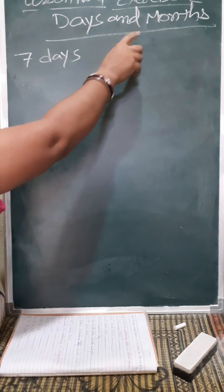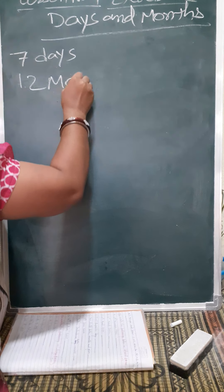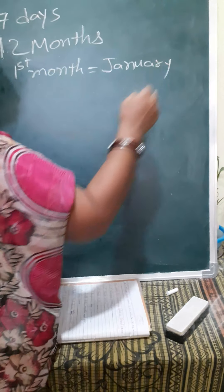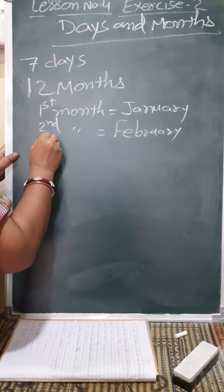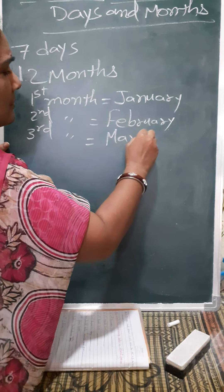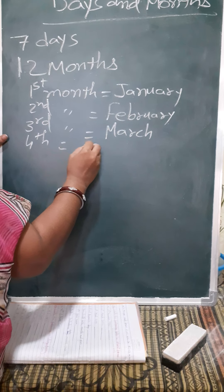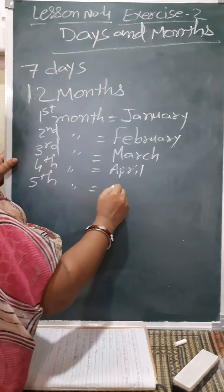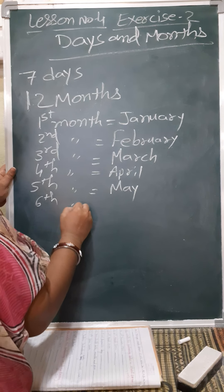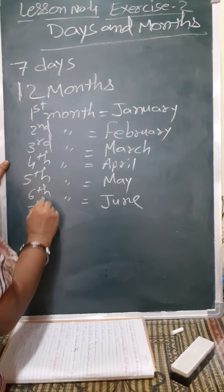Now months — you also know how many months are there in a year. There are 12 months in a year. The 1st month is January, 2nd is February, 3rd is March, 4th is April, 5th is May, 6th is June, 7th is July, 8th is August, 9th month, 10th month is October.